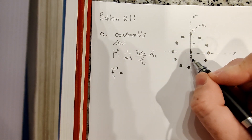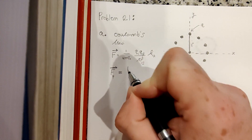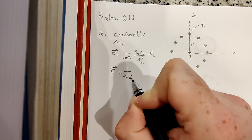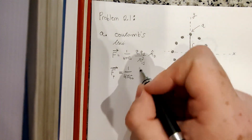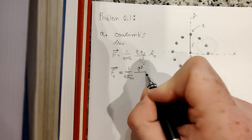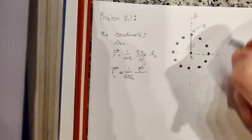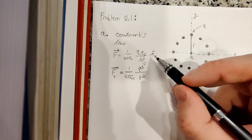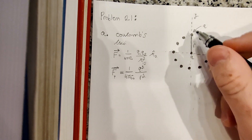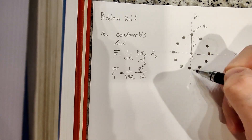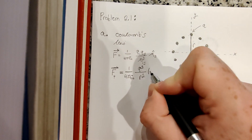So the force that this top charge exerts will be 1 over 4π epsilon naught — Coulomb's constant k. The problem tells us the magnitude of each of the outer charges is q and the magnitude of the center charge is Q, so we'll have q squared on top — well, actually little q times big Q. The distance between the two charges is R squared. Since they're both positive, there will be a repelling force, so this charge is pushing the center charge away in the minus ŷ direction.